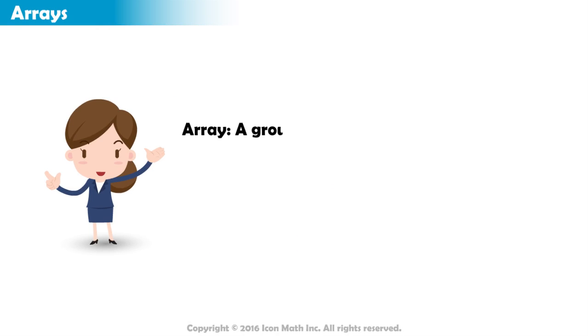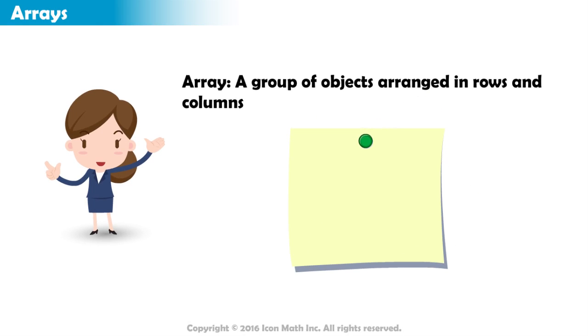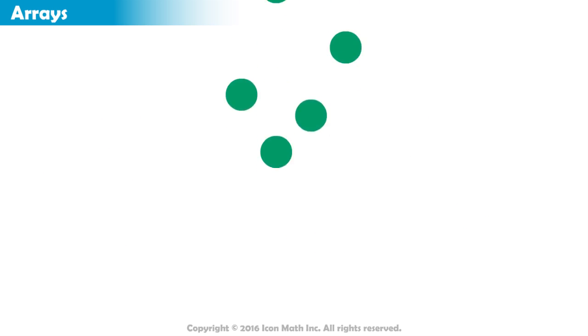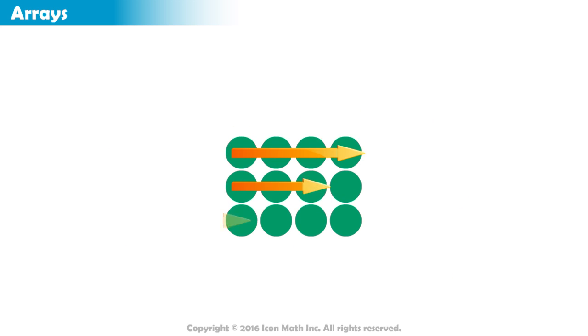An array is a group of objects arranged in rows and columns. Remember, the row goes side to side while the column goes up to down. This array has three rows and four columns.